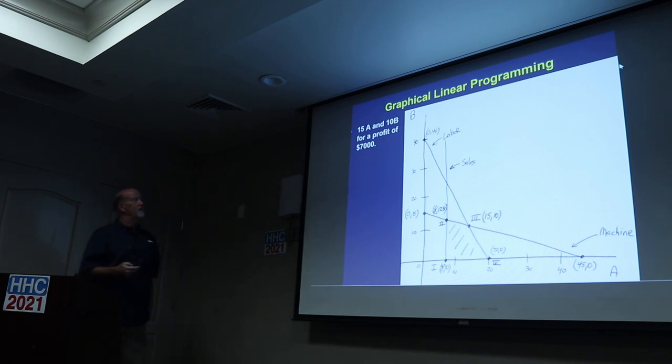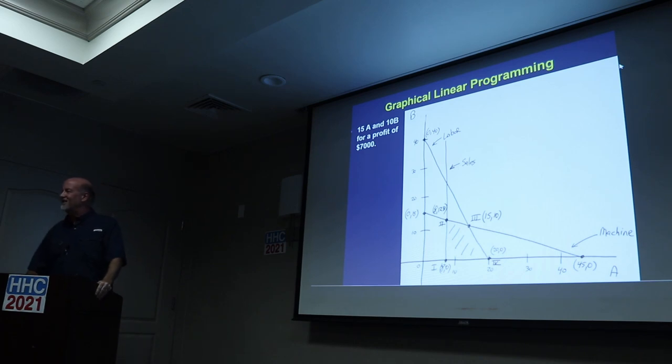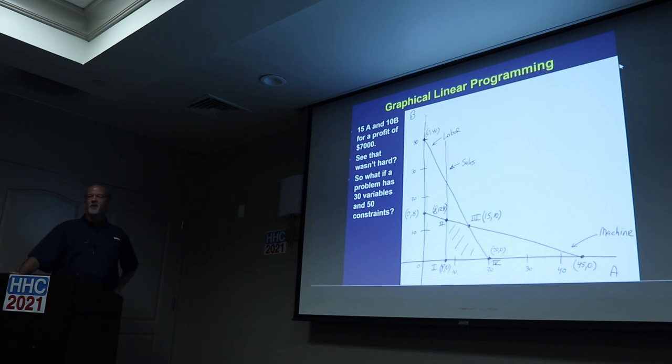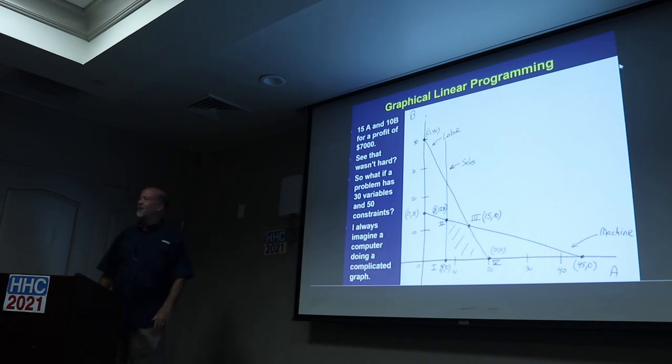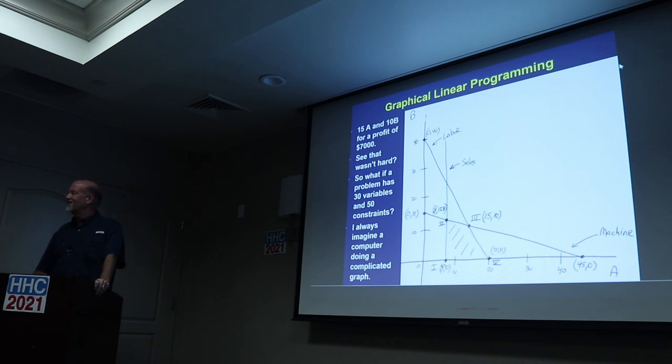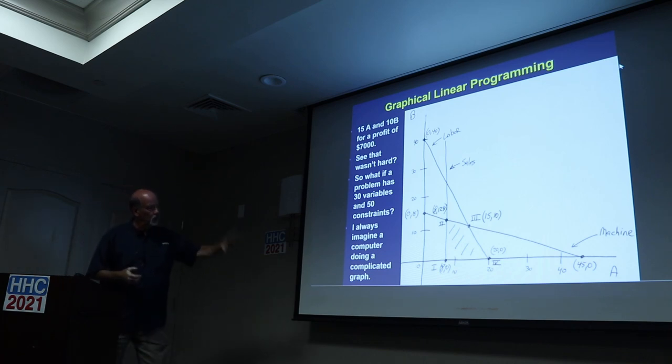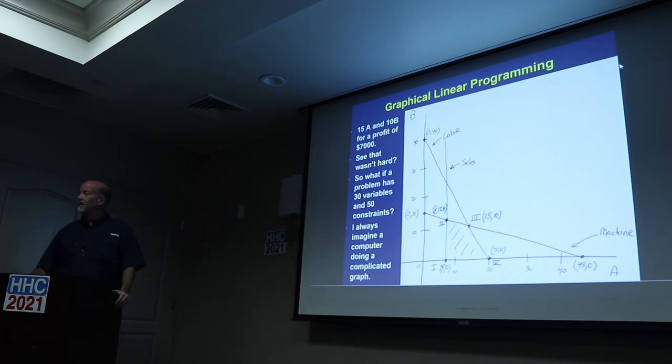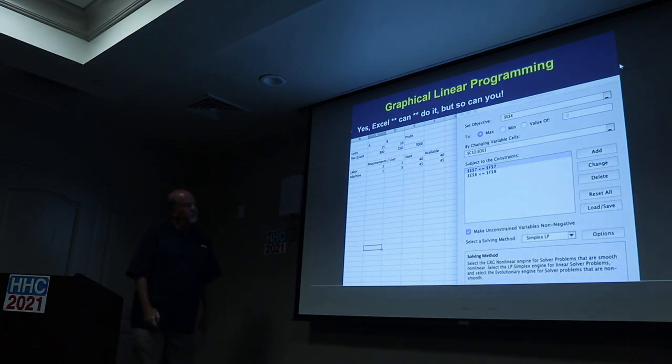So there's your answer. 15A and 10B for a profit of $7,000. So what if a problem has 30 variables and 50 constraints? I always imagine a computer doing a very complicated graph. But if I think about it in terms of two variables, I can let the complicated stuff be done by a computer. But if I understand the two and I think about the concepts here, then when I'm looking at the results a computer spits out, I'll understand what it did.